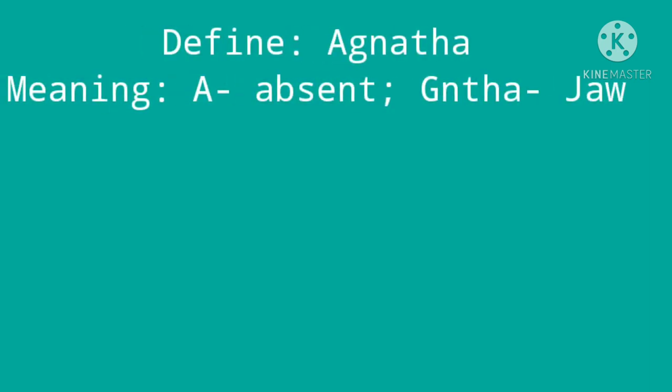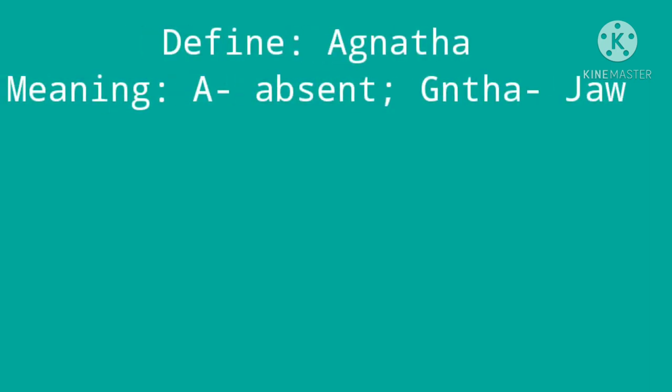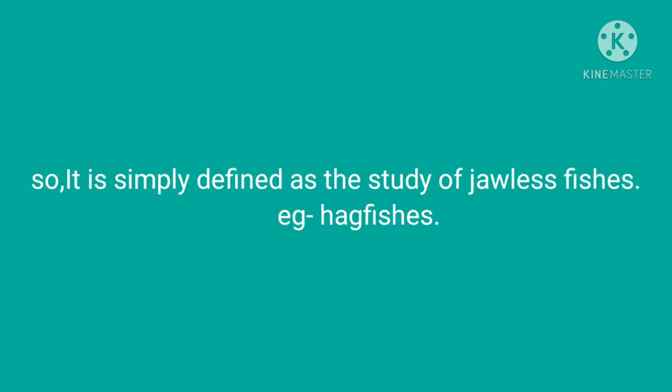Agnatha is a word. It is divided into two words. 'A' means absent, and 'gnatha' means jaw. So it is simply defined as the study of jawless fish.